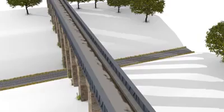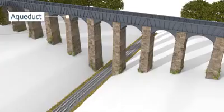In a cutting, watercourses that need to cross the track can be transported either over the track in an aqueduct or under the track via a siphon.